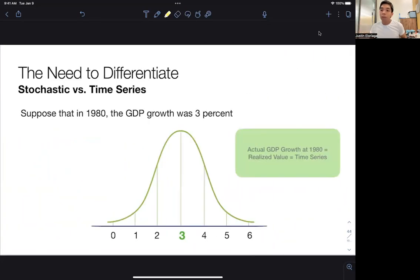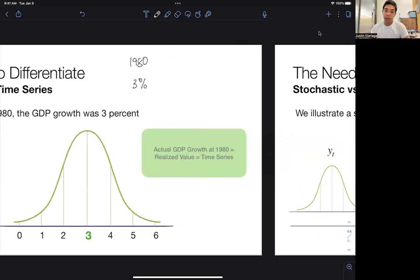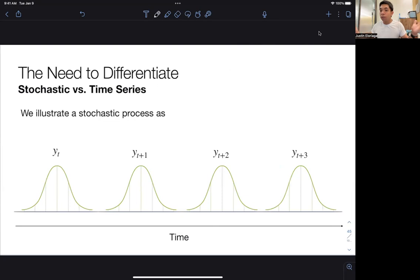So suppose now that the GDP growth in 1980 when it actually happened was 3%. That 3%, so in 1980, if GDP grew by 3%, that point starts basically the time series because that was the realized value. That was what actually happened in 1980. It is the start of our time series. It's the start of the realized value of the series.